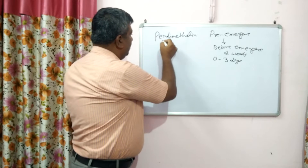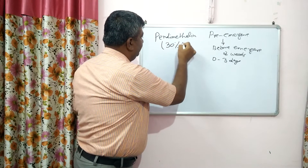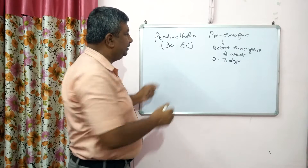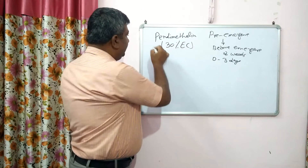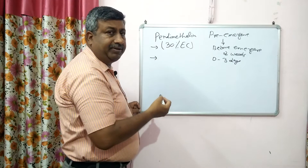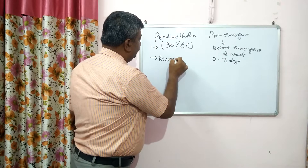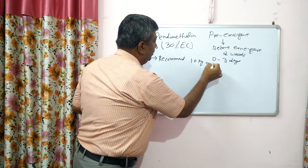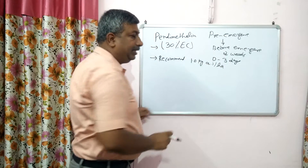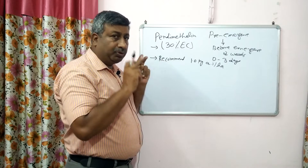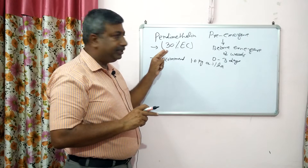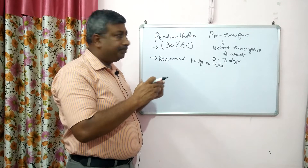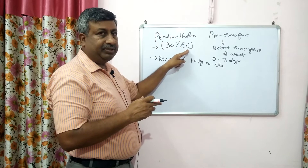There is often confusion about this. First, find out whether it is 30% EC or 30 EC. Generally it is 30 EC. If it is written as 30 EC, it means the toxicant amount is 30%. The second information needed is the recommended rate of application.